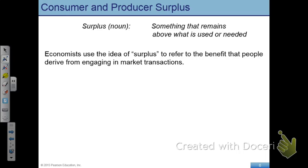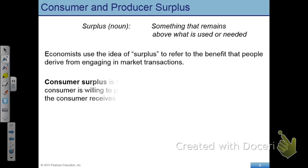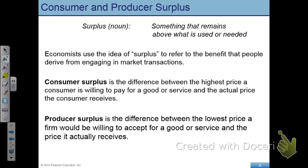We're going to start with a very basic term called surplus. In English, surplus is a noun which measures something that remains above and beyond what is used or needed — for example, the surplus food you have after dinner, or the surplus battery life you have left. Economists use this word surplus to figure out how people and firms benefit by engaging in transactions in a marketplace. We are now going to define two terms that summarize the benefit of the consumer and the producer.